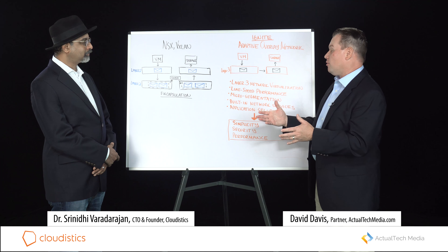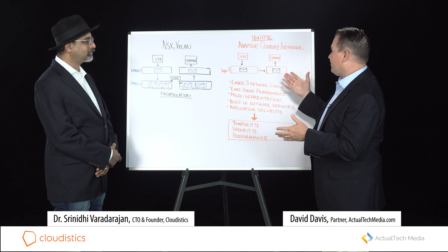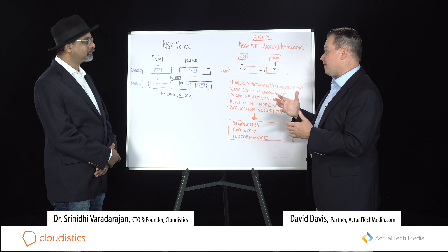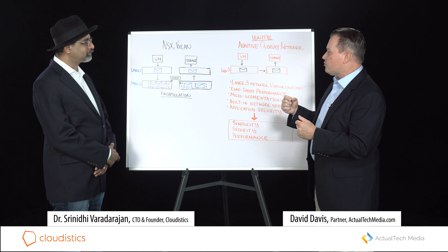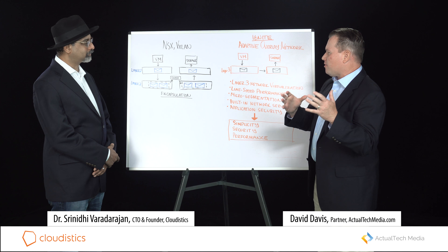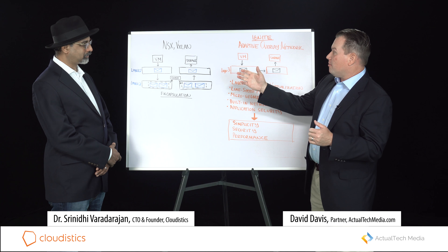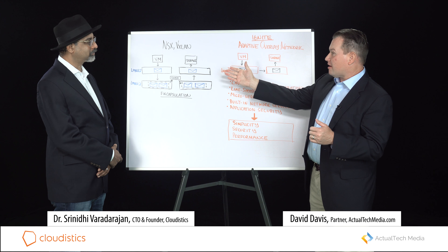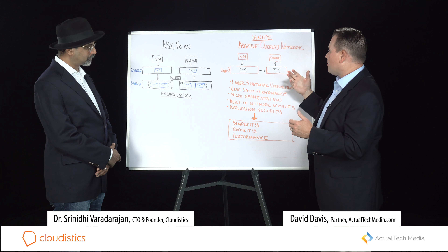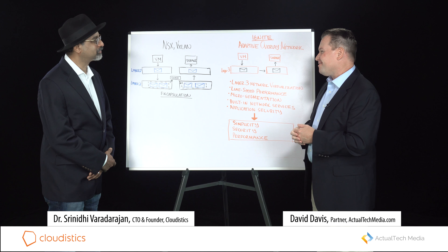I'm excited to learn more about network virtualization and what the Cloudistics Ignite network virtualization can do. Why don't you start by telling us how the traditional network compares to VMware's NSX solution, which uses VXLAN, and then how that compares to Cloudistics Ignite network virtualization?